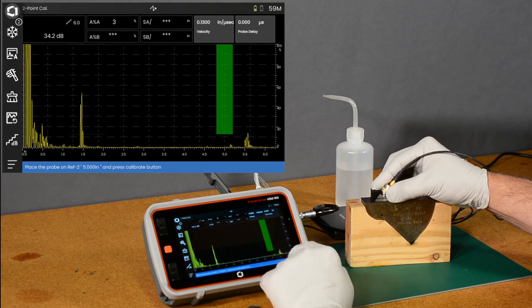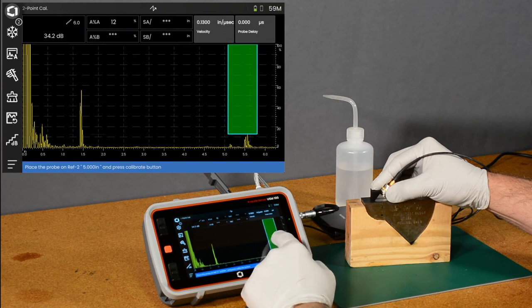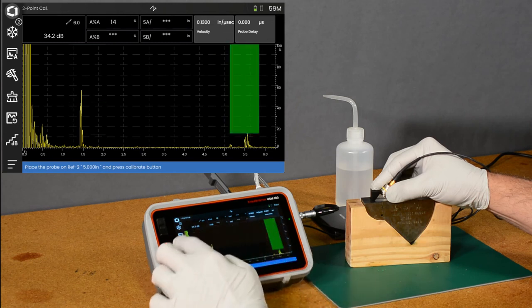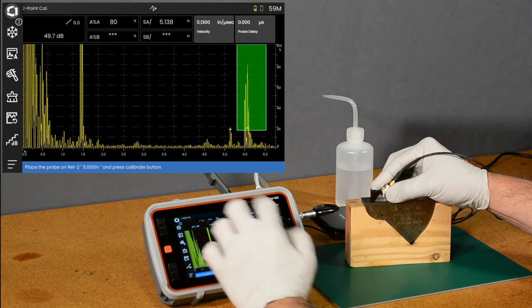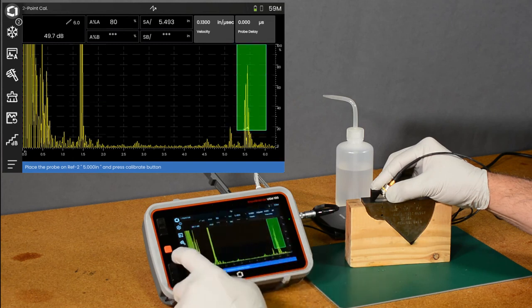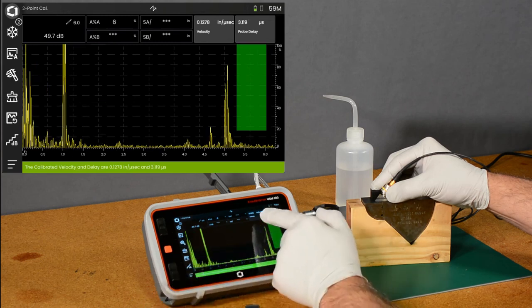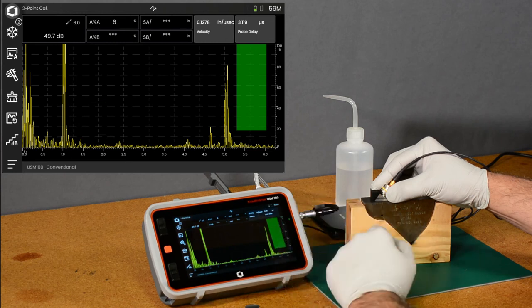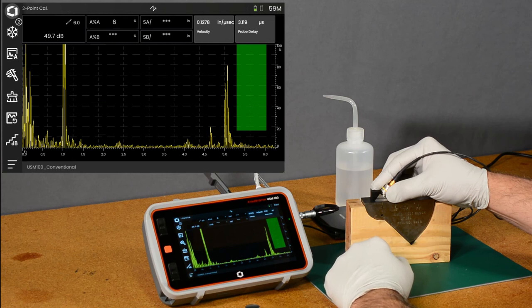And it says show me the five inch echo. So let's come out here. Get some more amplitude. Gate over the five inch right there. And hit cal. And it calculates the velocity at 0.1278 inches per microsecond. And our probe delay at 3.19 microseconds.